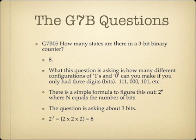How many states are there in a three-bit binary counter? The answer is eight. This question asks how many different configurations of ones and zeros you can make with only three digits. There's a simple formula: two to the nth, where n equals the number of bits. The question asks about three bits, so the formula is two to the third — two times two times two — which equals eight.